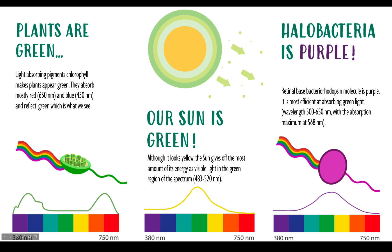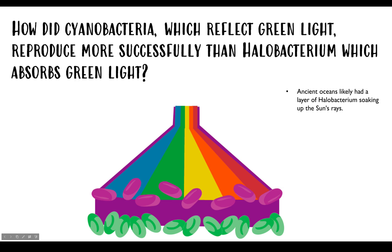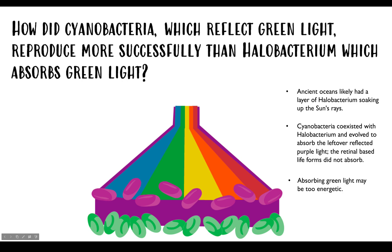You might be wondering how cyanobacteria became more successful on this planet if halobacteria, which is from archaea, is much better at processing that green light from our sun. Think back to the ancient oceans — there were probably tons of halobacteria coating the oceans and just a little bit of cyanobacteria here and there. The halobacteria was absorbing all the colors of light from the spectrum, and cyanobacteria probably evolved because it was just taking the leftovers. It turns out those leftovers actually made cyanobacteria better at thriving on Earth.